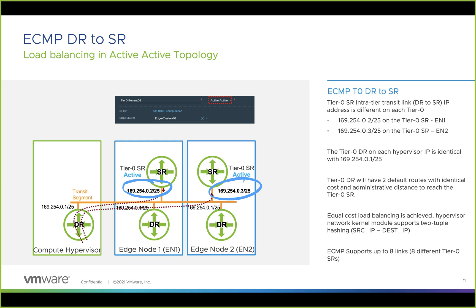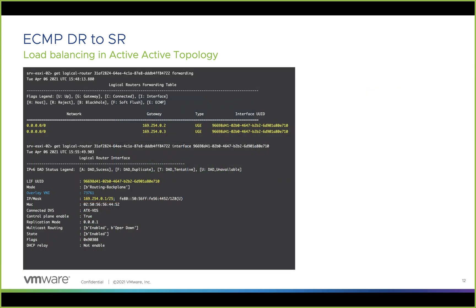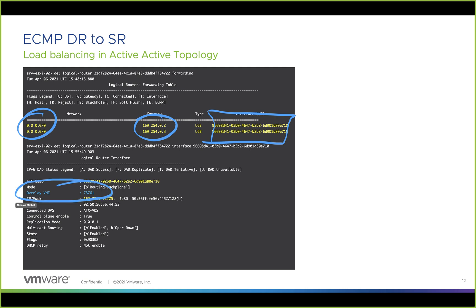As a reminder, the compute hypervisor ESXi supports two-tuple ECMP hashing, meaning it hashes based on source and destination IP to choose which edge node to send traffic to. Looking at the routing table, we can see two equal-cost default routes pointing to .2 and .3, which are the SRs on edge node 1 and edge node 2. We can see the interface ID on which interface is used, and that an overlay is used to send traffic from the DR to the SR.